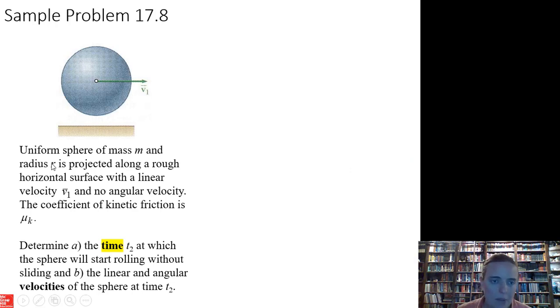Uniform sphere of mass m and radius r is projected along a rough horizontal surface with a linear velocity v1. We're traveling in the x direction. No angular velocity, so it starts out not rotating, just going straight forward.